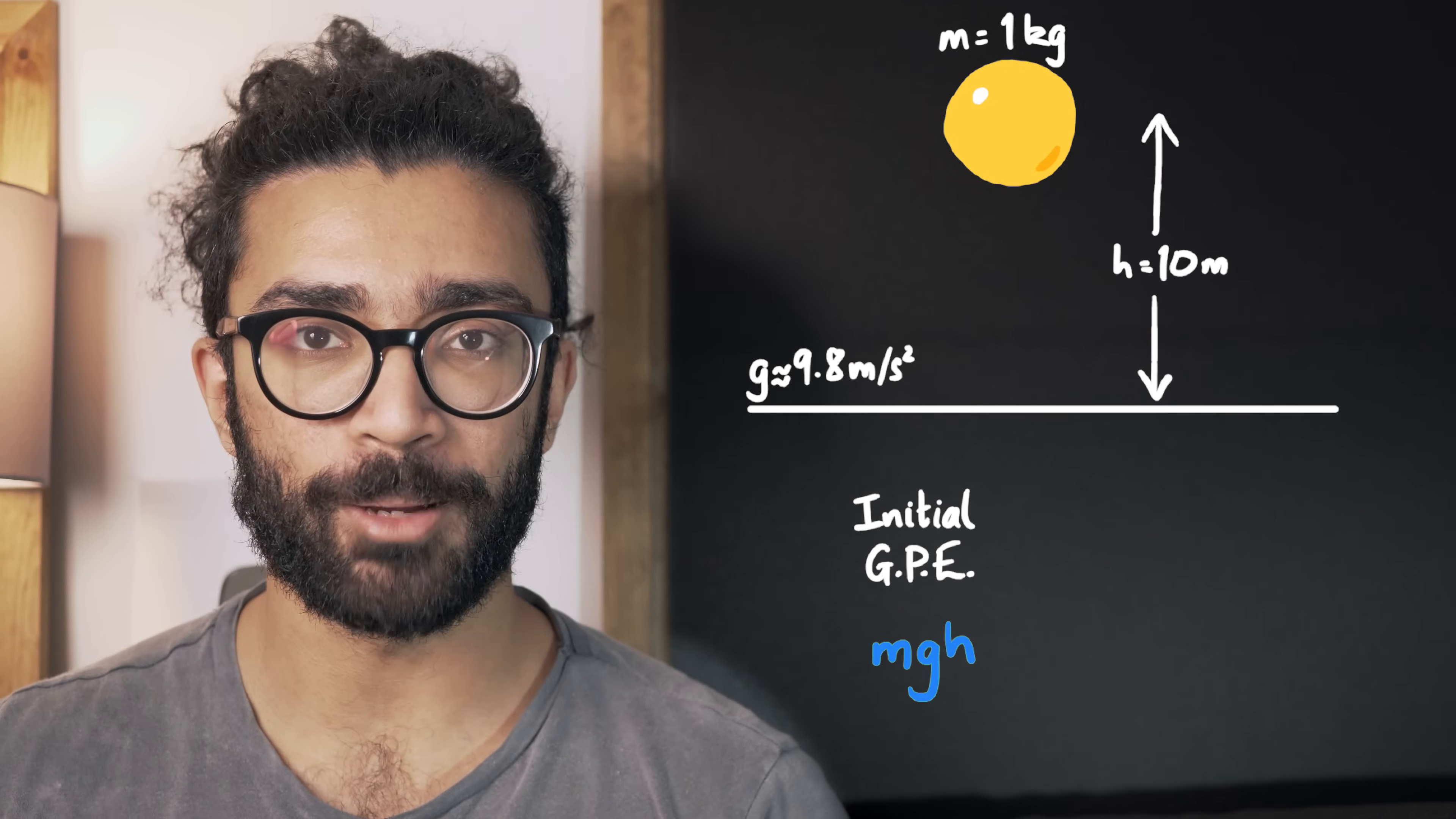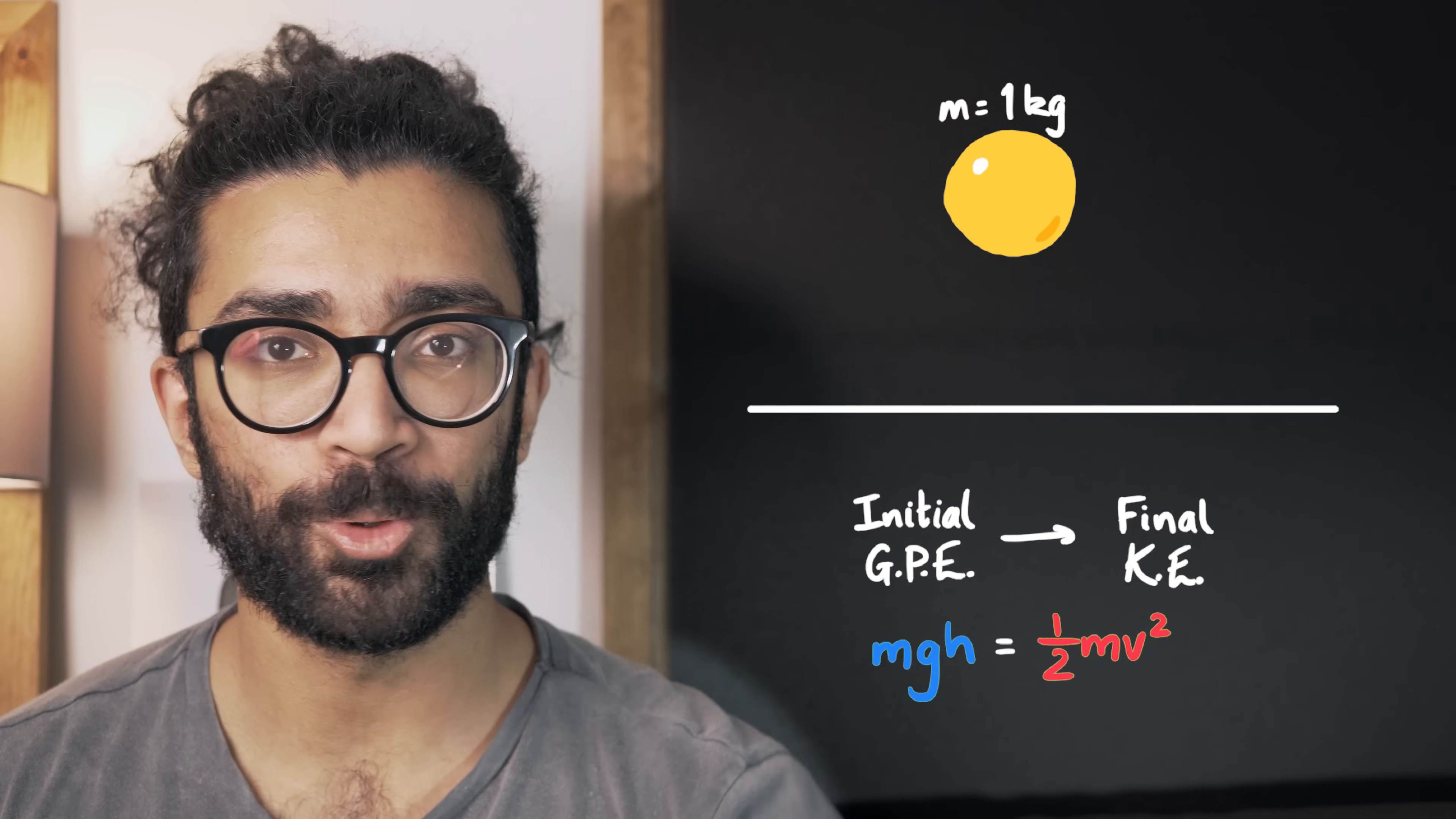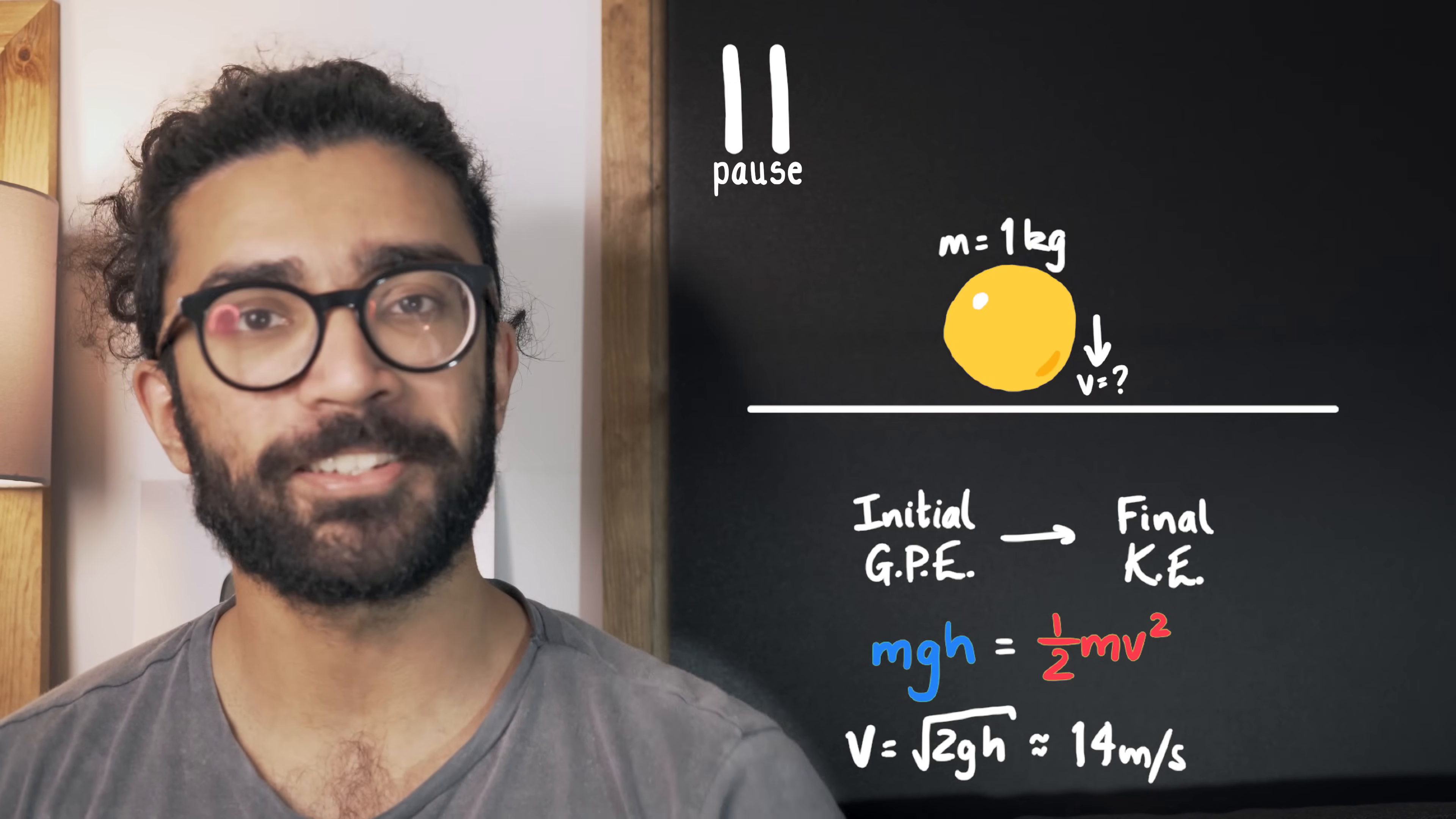For example, a ball with a mass of 1 kilogram placed about 10 meters above the surface of the Earth, when released, should accelerate down towards the surface of the Earth, and just before it hits the Earth's surface, it should have this speed. And it does, on a consistent basis.